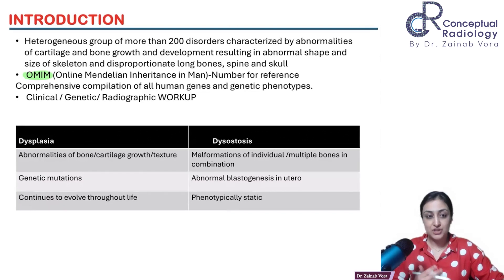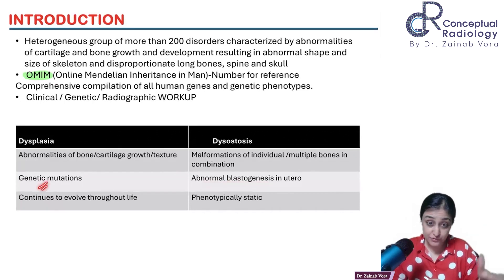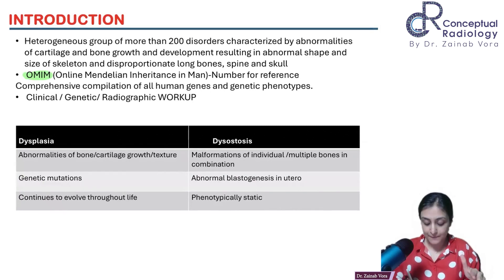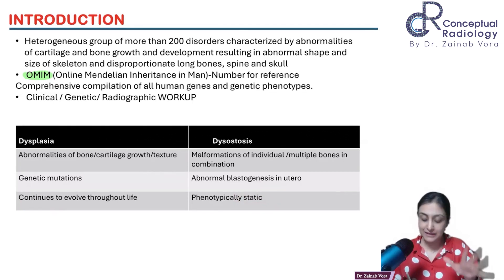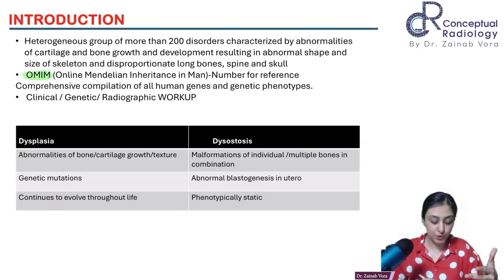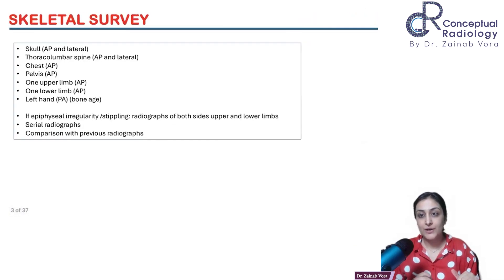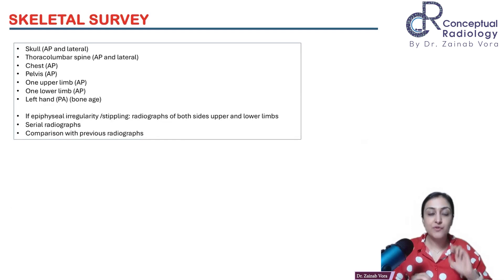A nomenclature point: the difference between dysplasia and dysostosis. Dysostosis is related to abnormal blastogenesis and is considered a static sequence — whatever happened during embryology remains fixed; it can affect individual or multiple bones. Dysplasia, on the other hand, continues to evolve as the child grows. What we are going to discuss are predominantly dysplasias.